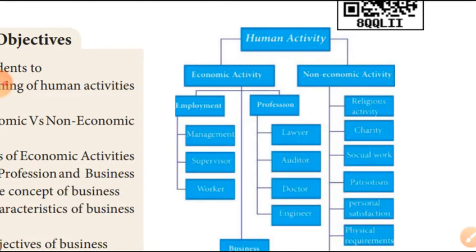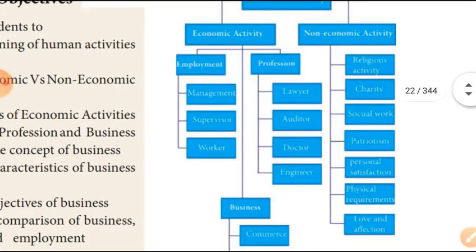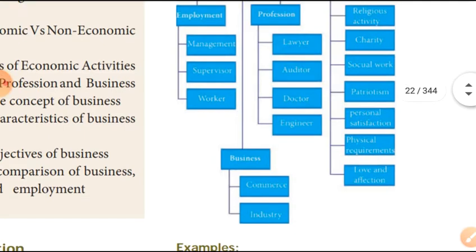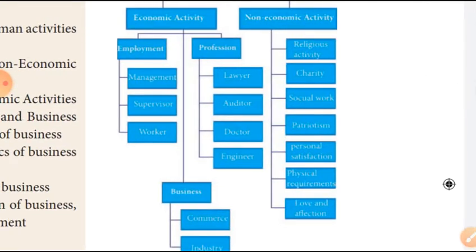Looking at the chart of examples: Economic activities include Employment (Supervisor, Worker), Profession (Lawyer, Auditor, Doctor, Engineer), and Business (Commerce, Industry). Non-economic activities include Religious activities, Charity, Social Work, Patriotism, Personal Satisfaction, Physical Requirement, and Love and Affection.